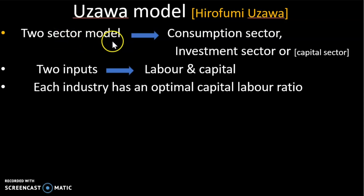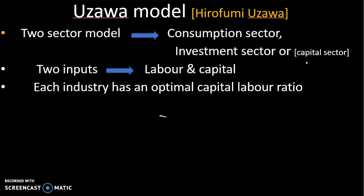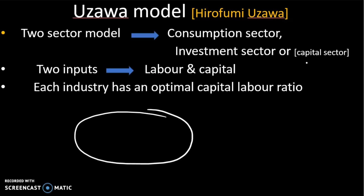This model is a one-sector model, but the Uzawa model is a two-sector model. Two sector model has two sectors: one is the investment sector and the second is the consumption sector.